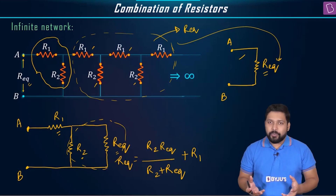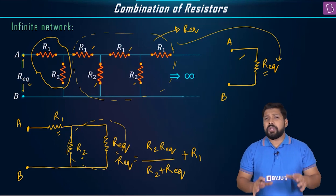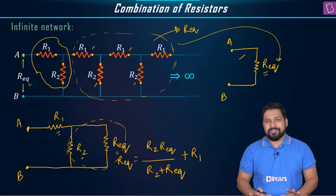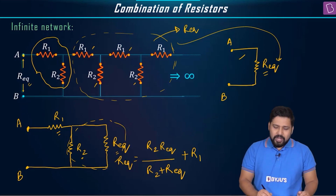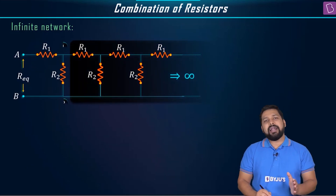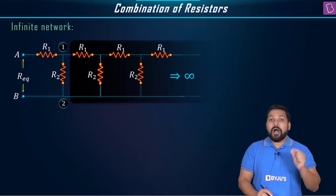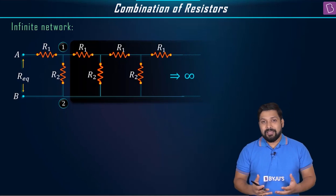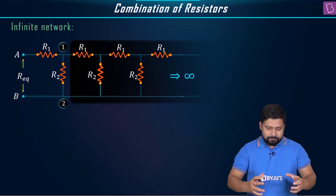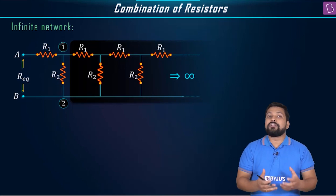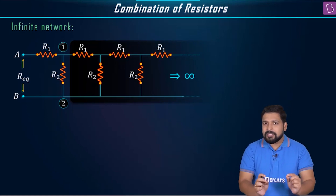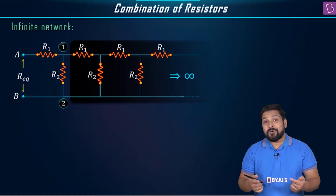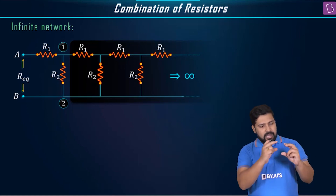We will get a quadratic equation in R equivalent; on solving, two roots appear, and we take the positive one because equivalent resistance cannot be negative. To summarize the method again: first, identify that it is an infinite network problem — you can tell just by looking at the diagram. Next, figure out which pattern is repeating; in this case R1, R2, R1, R2 is repeating.